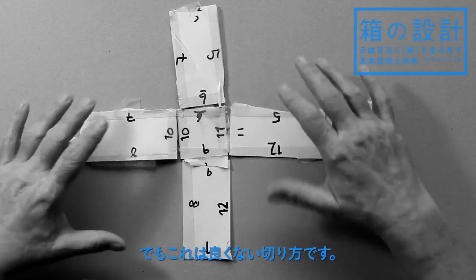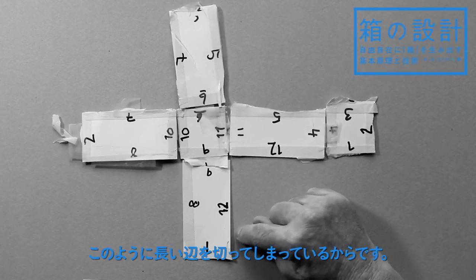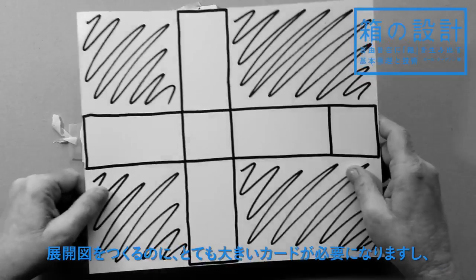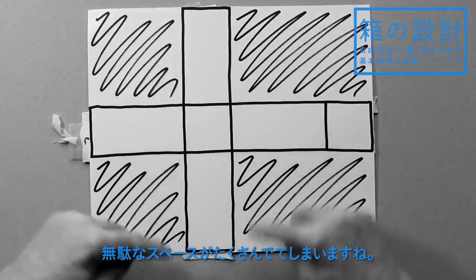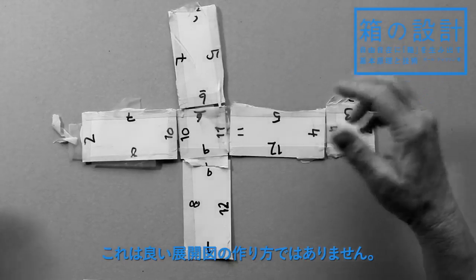But here I've cut it in a really bad way for the reason that I've got many long sides that were cut. So what this does is occupy a very large area of card with a lot of waste on it. It's not a good way to make a net.